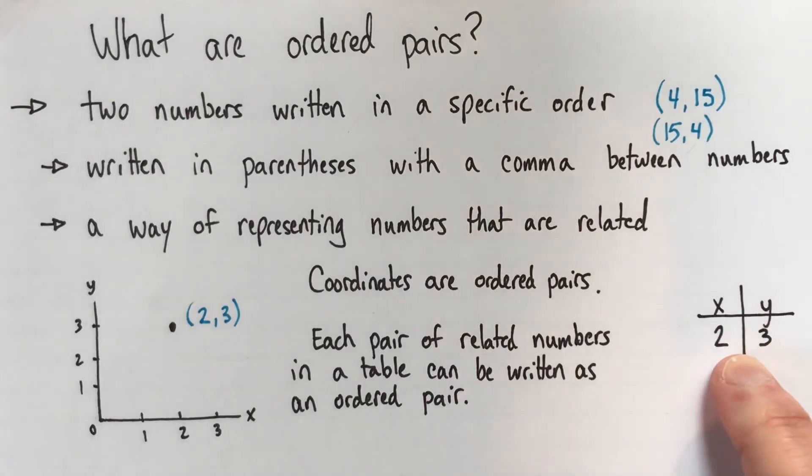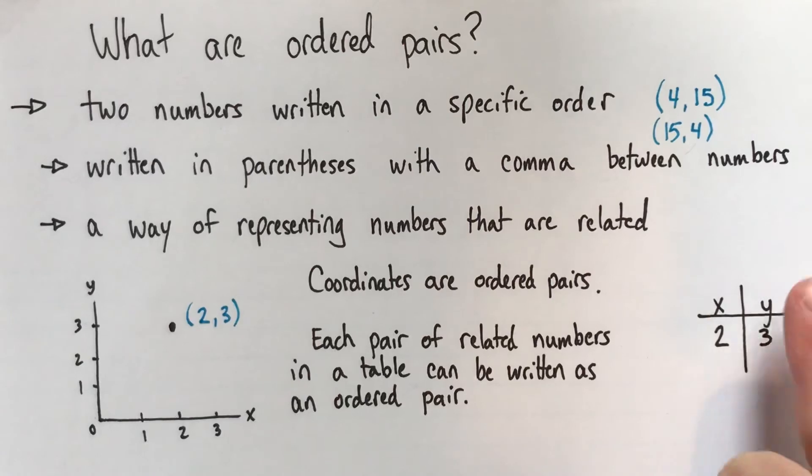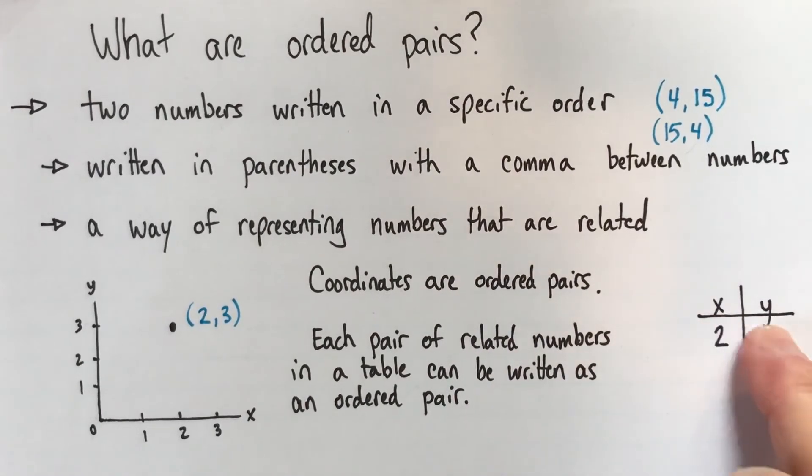And another place that ordered pairs crop up, anything that you can represent in a two-column table, if you're representing some sort of relationship between two variables. So, here I've called them x and y, they don't necessarily have to be called that. And you could also read that each line in the table could correspond with one ordered pair.